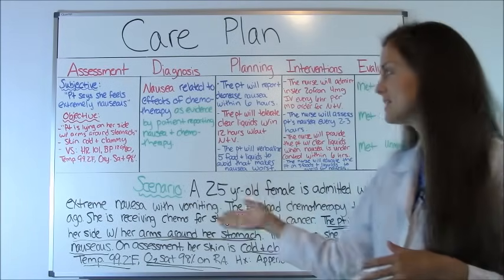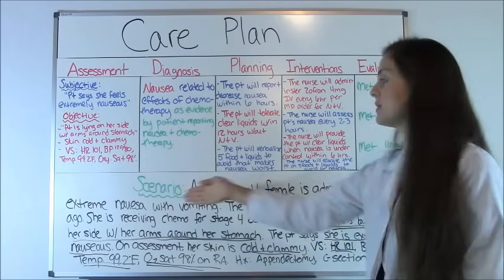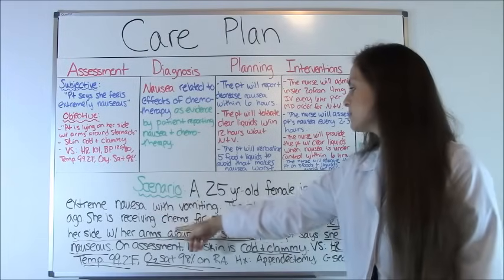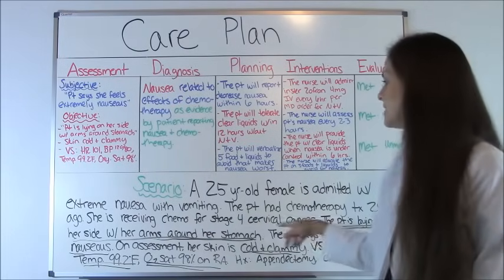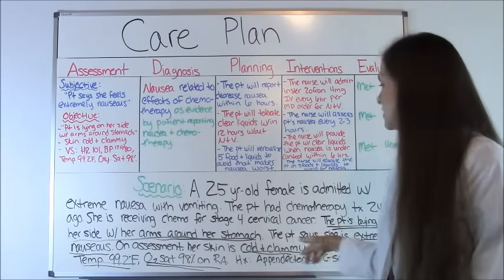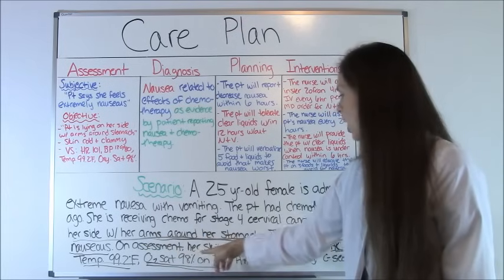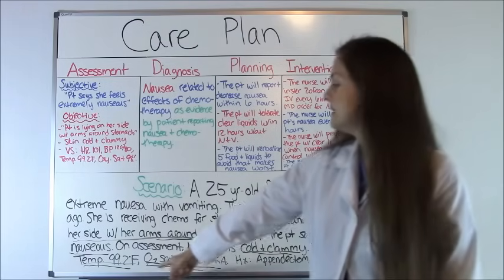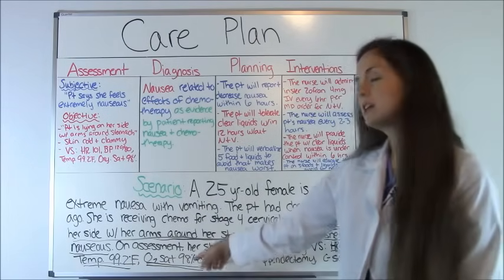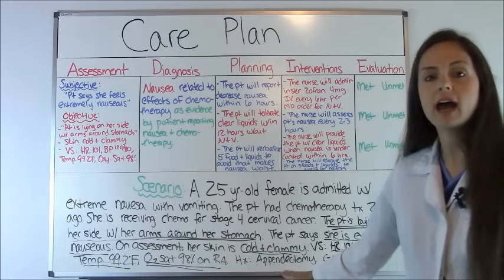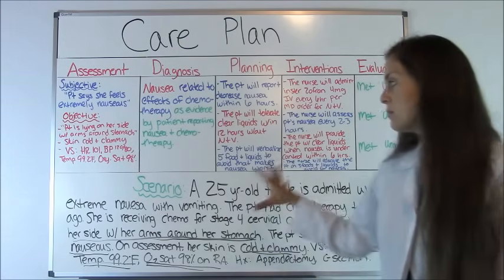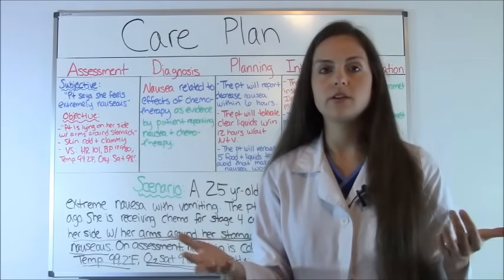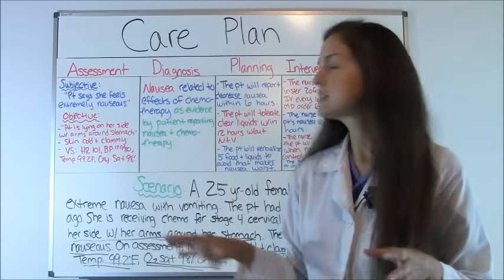Step one: read your scenario. We have a 25-year-old patient admitted with extreme nausea and vomiting. The patient had chemotherapy treatment 24 hours ago and is receiving chemo for stage four cervical cancer. The patient is laying on her side with her arms around her stomach. The patient says she's extremely nauseous. On assessment, her skin is cold and clammy, heart rate is 101, blood pressure 120 over 80, temperature 99.2°F, oxygen saturation 98% on room air, and she has a history of an appendectomy and a C-section.